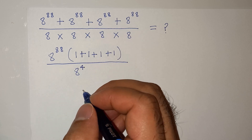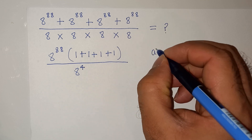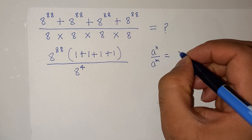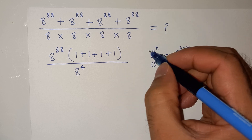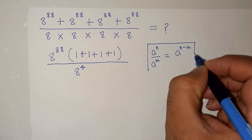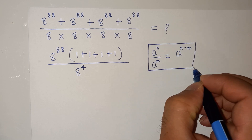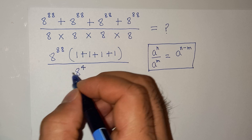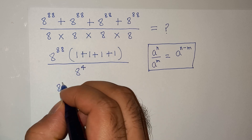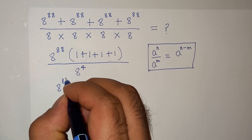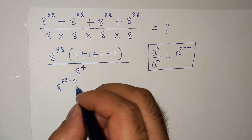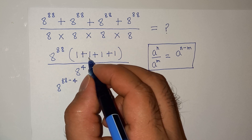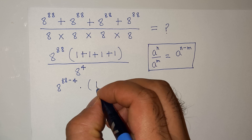Now we know the exponential rule which is a power n divided by a power m equals a power n minus m. We are going to apply this exponential rule over here. Since the base 8 is common, this will be 8 power 88 minus 4. And in the bracket we have 1 plus 1 plus 1 plus 1, which is 4.